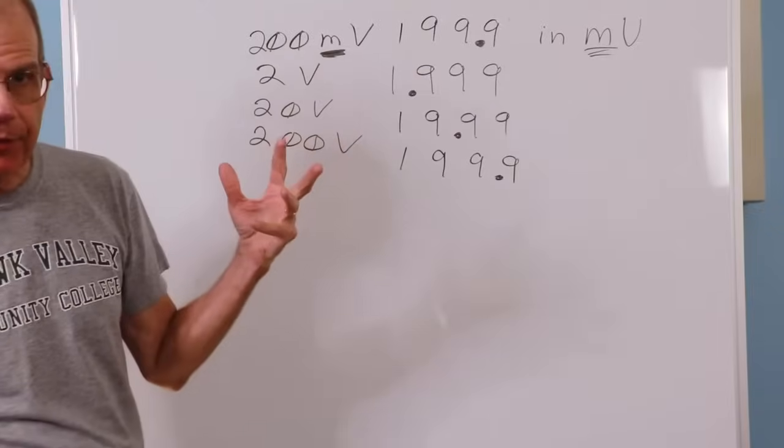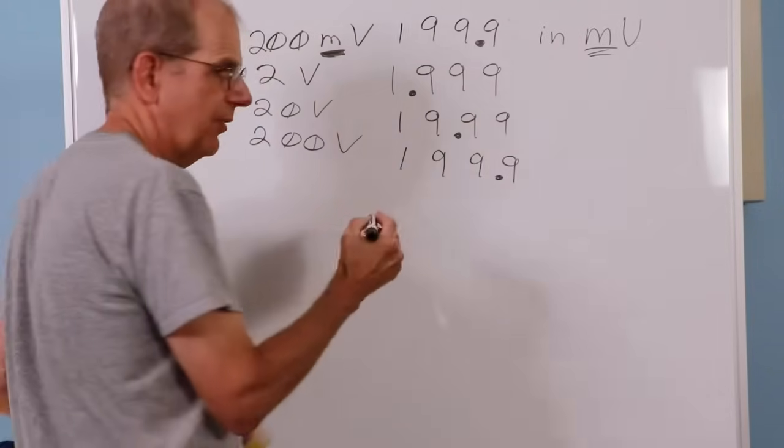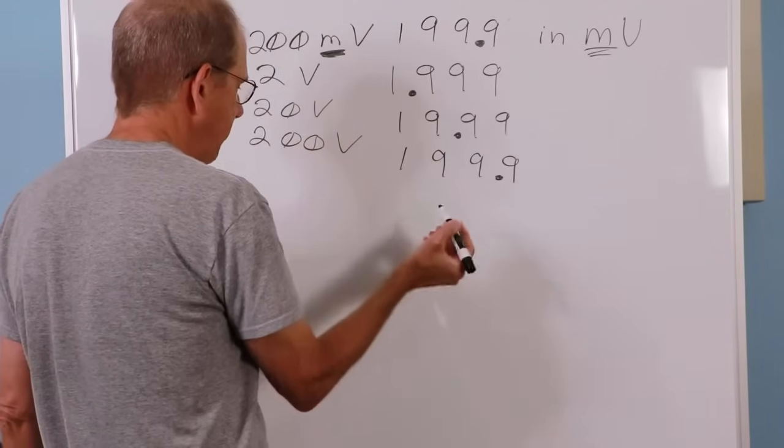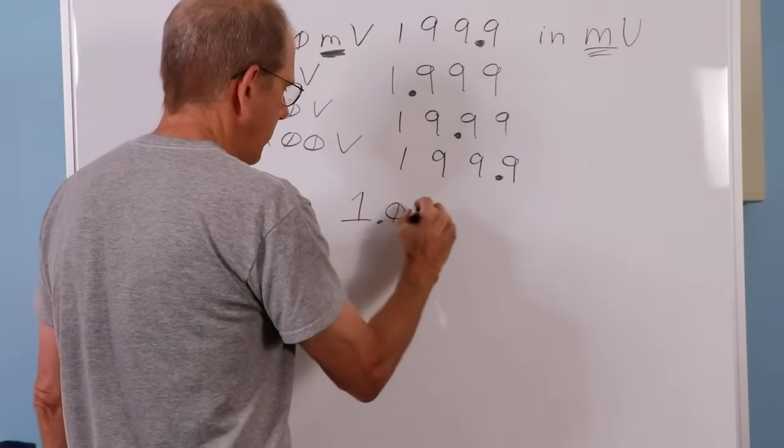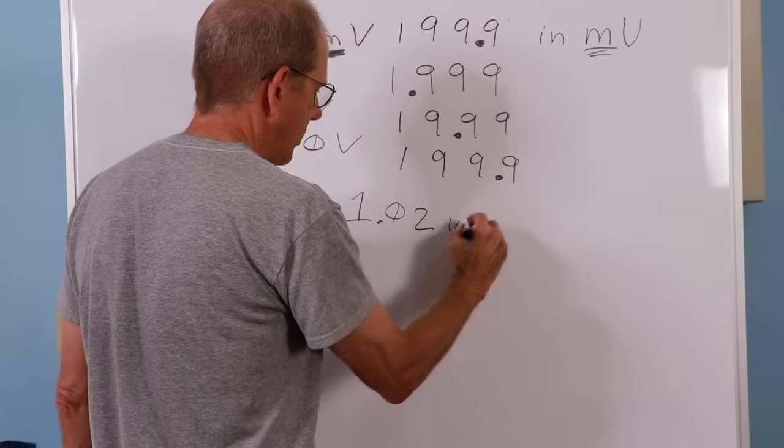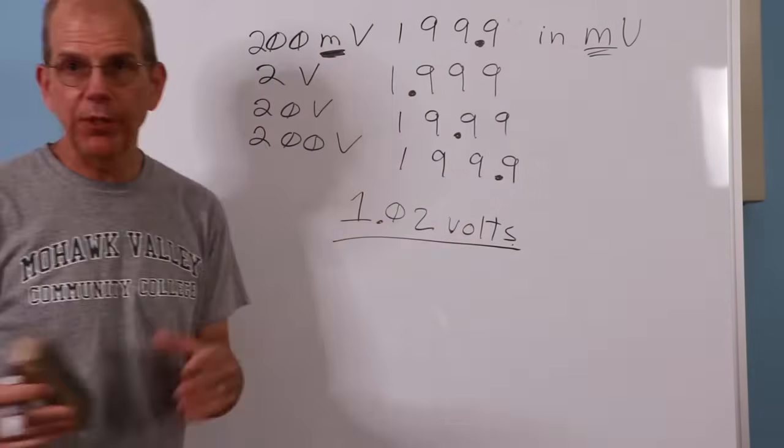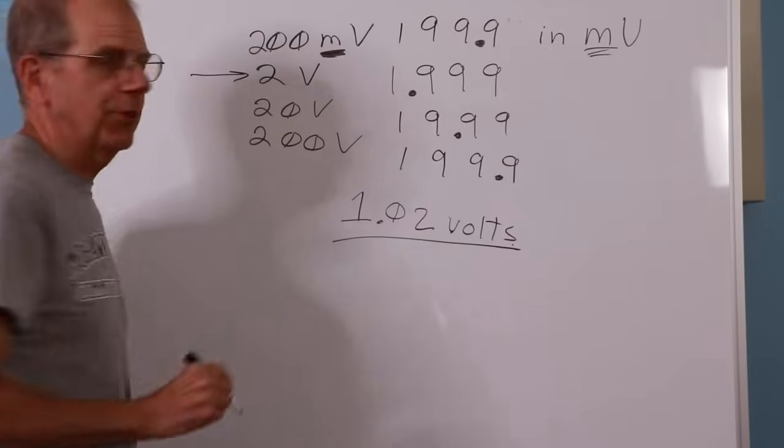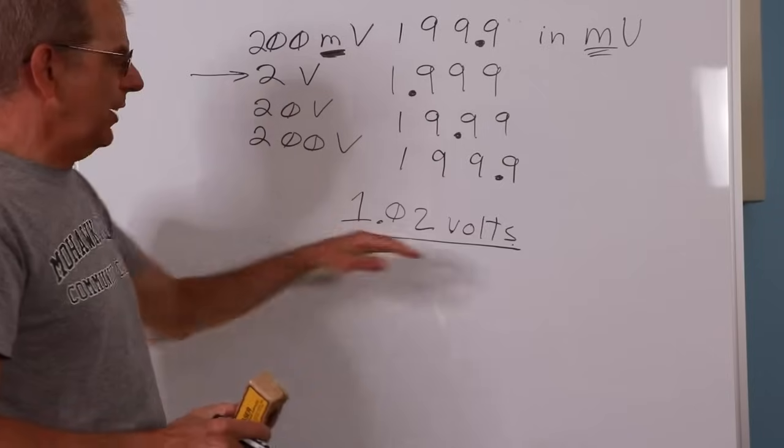All right. So let's get back to our accuracy thing here. So let's say that we're going to measure a voltage and it happens to be maybe 1.02 volts. The first question is what scale do you put this thing on?